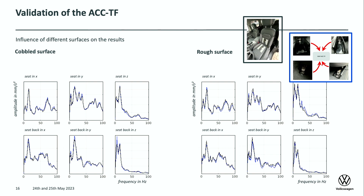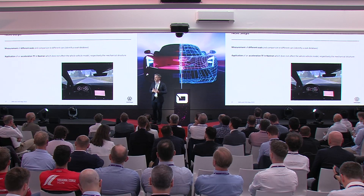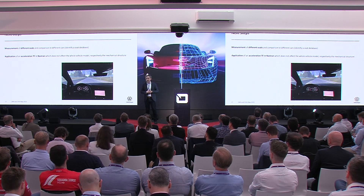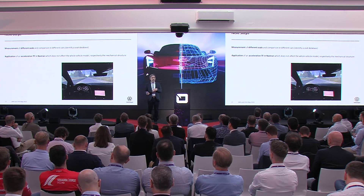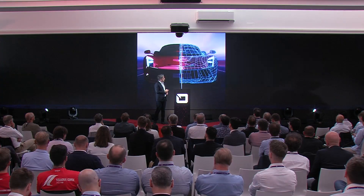Regarding next steps: we need to measure different seats to build a library of different seats — bigger cars and smaller cars — which we can use as transfer functions for our NVH calculation models. We also have to apply these acceleration transfer functions in our calculation process, using mostly Nastran for NVH calculation. The acceleration transfer function must have no effect on the structure when calculated — it should only take acceleration values and calculate accelerations, requiring some negative stiffnesses to perform these calculations. Thank you very much.